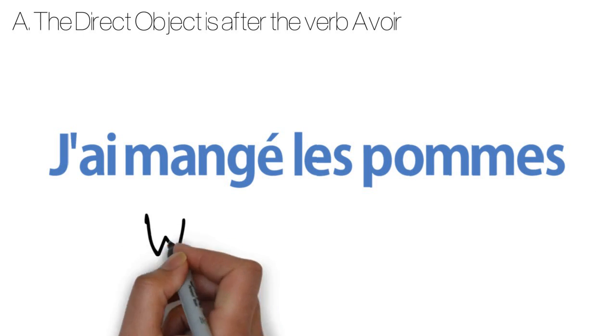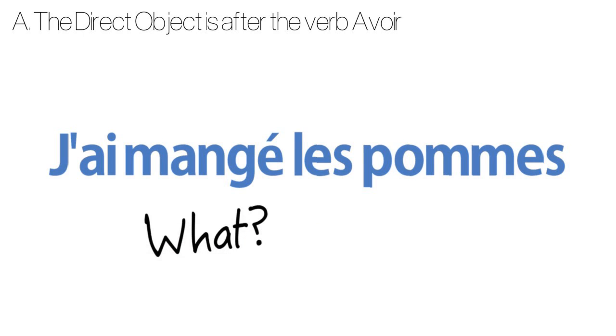So you need first to answer the question what? What is the direct object? A direct object comes directly after the verb with no preposition. So the verb is j'ai mangé. Where is the direct object? It's les pommes coming just after.